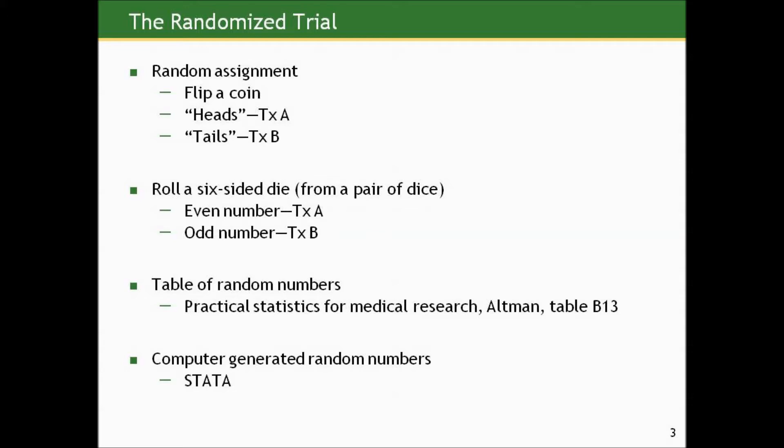We could roll a six-sided die from a pair of dice. Each one of the six sides contains the numbers one to six. If we get an even number, put them in treatment A. An odd number, put them in treatment B, since 50% of the numbers are even and 50% are odd.